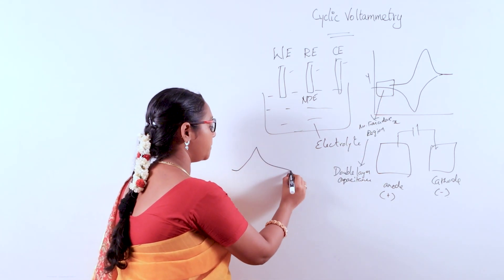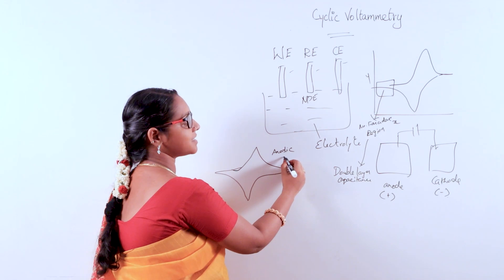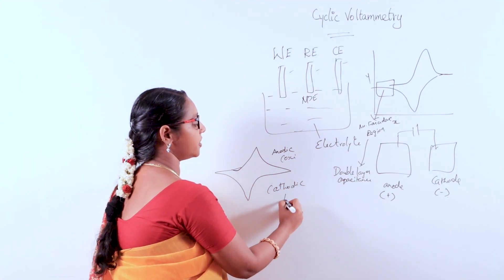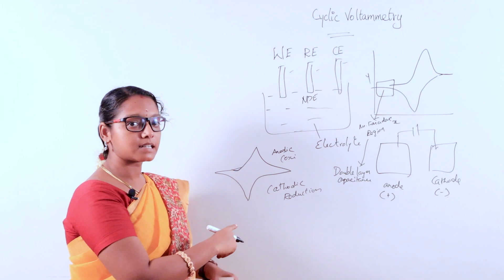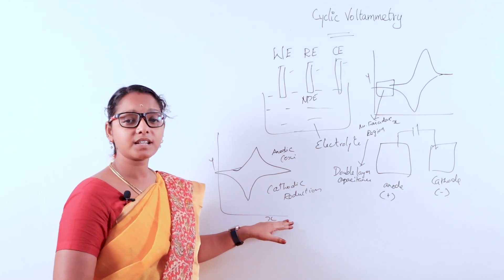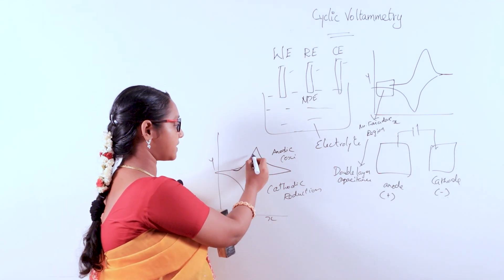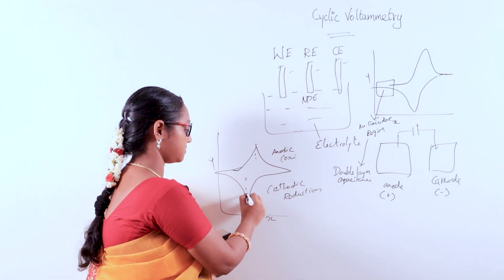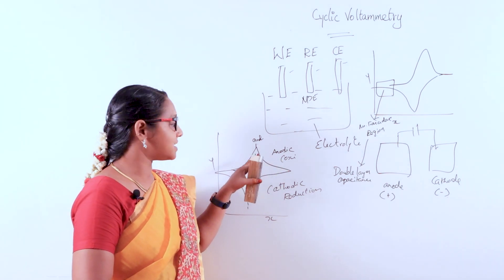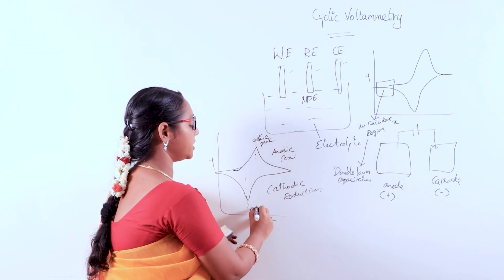From the cyclic voltammetry curve, the x-axis represents the applied potential and the y-axis represents the measured current. The anodic part is where oxidation occurs and the cathodic part is where reduction occurs. We identify the anodic peak current and the cathodic peak current from this curve.